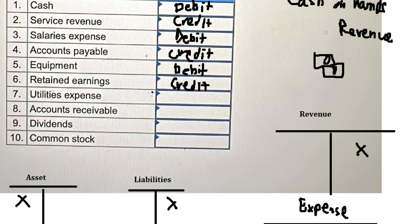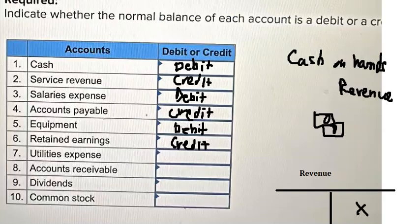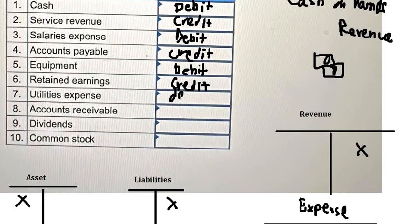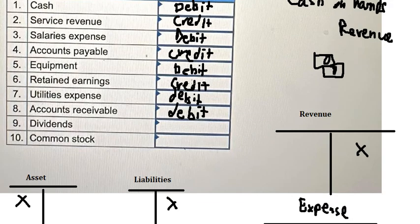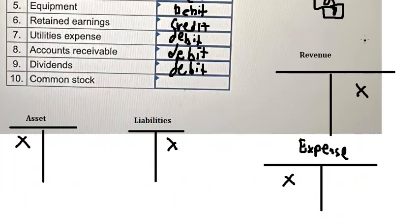This one — dividends — they reduce, just like expense, so they should be on debit. Accounts receivable is an asset, so that is also debit. Common stock increases cash just like revenue, so it goes to credit.